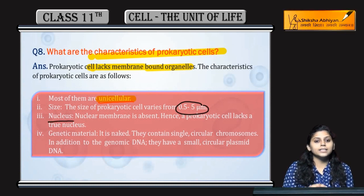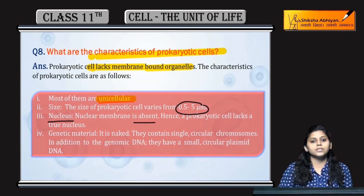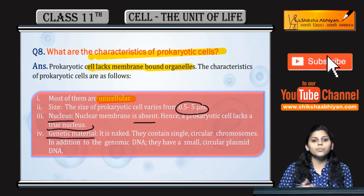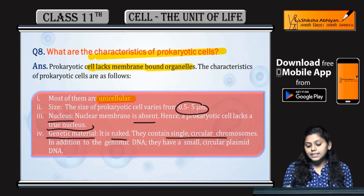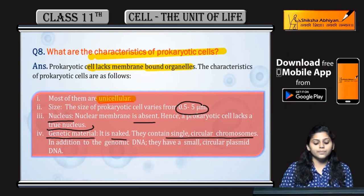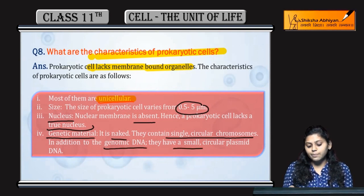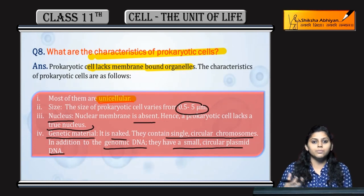Nucleus ki baat karen: nucleus and nuclear membrane are absent in prokaryotes. True nucleus nahin hota, lekin genetic material present hai — that is, naked DNA. It contains single circular chromosomes. In addition to genomic DNA, unke paas small circular plasmid DNA bhi hota hai.